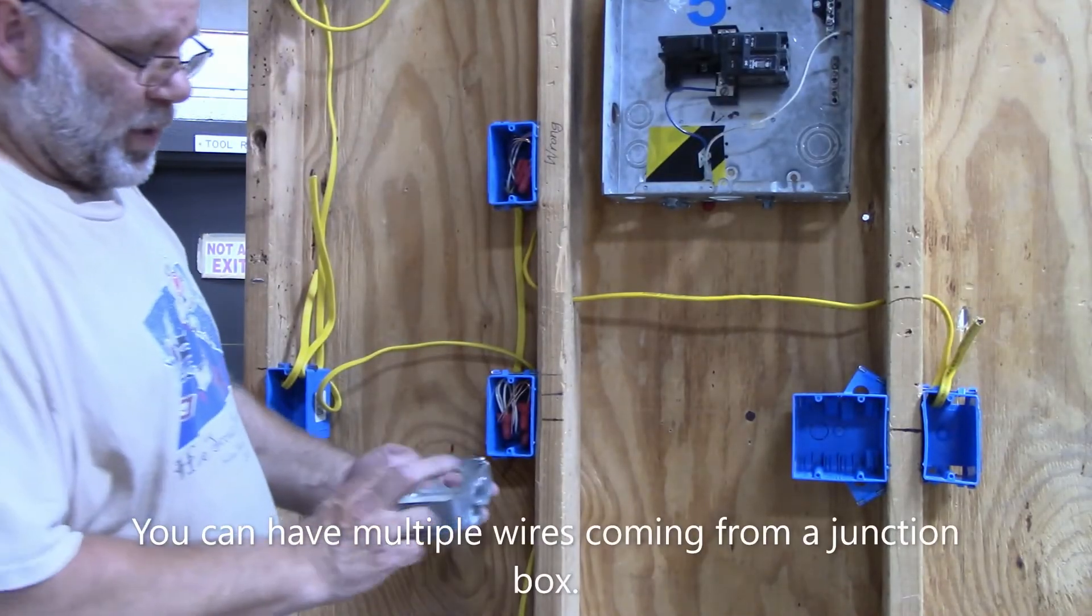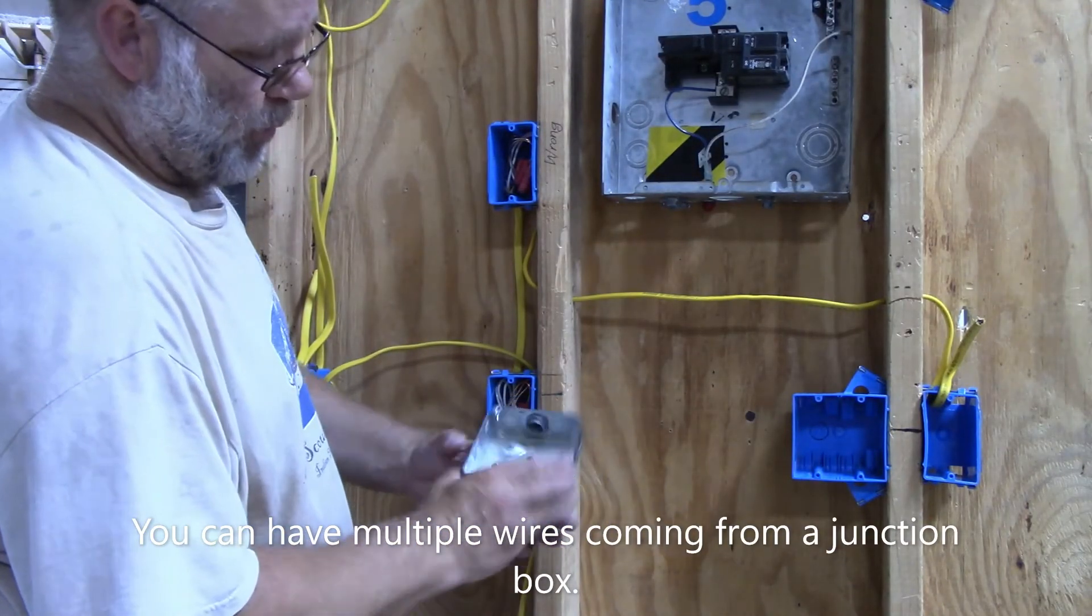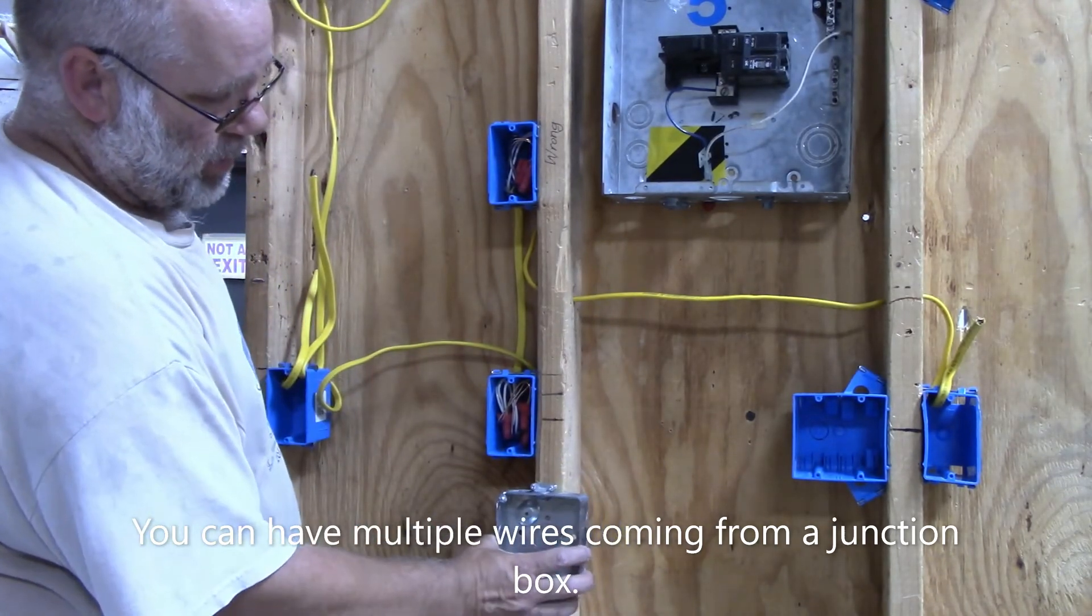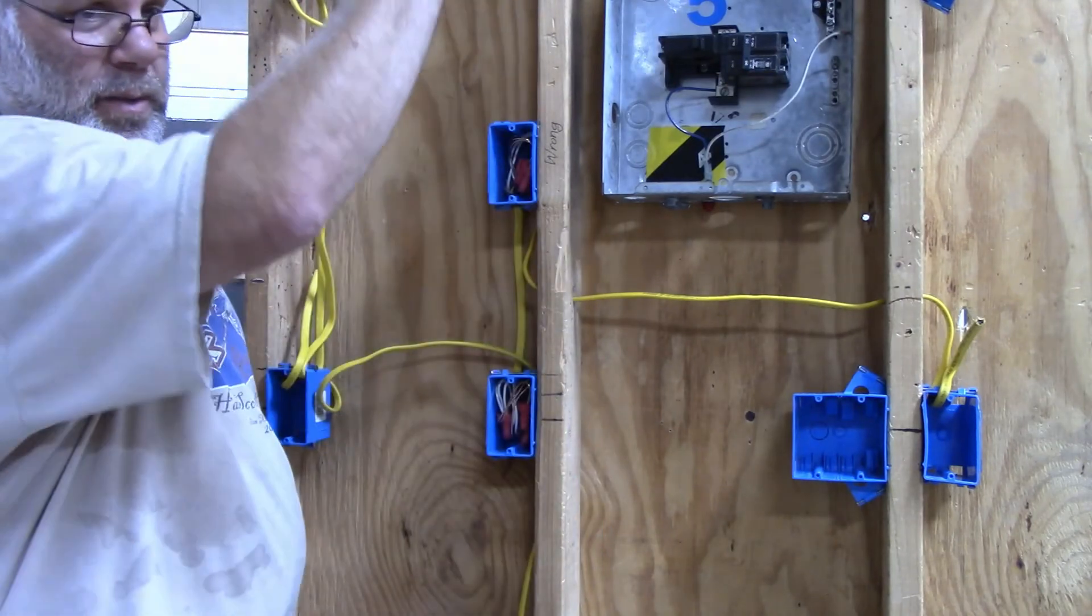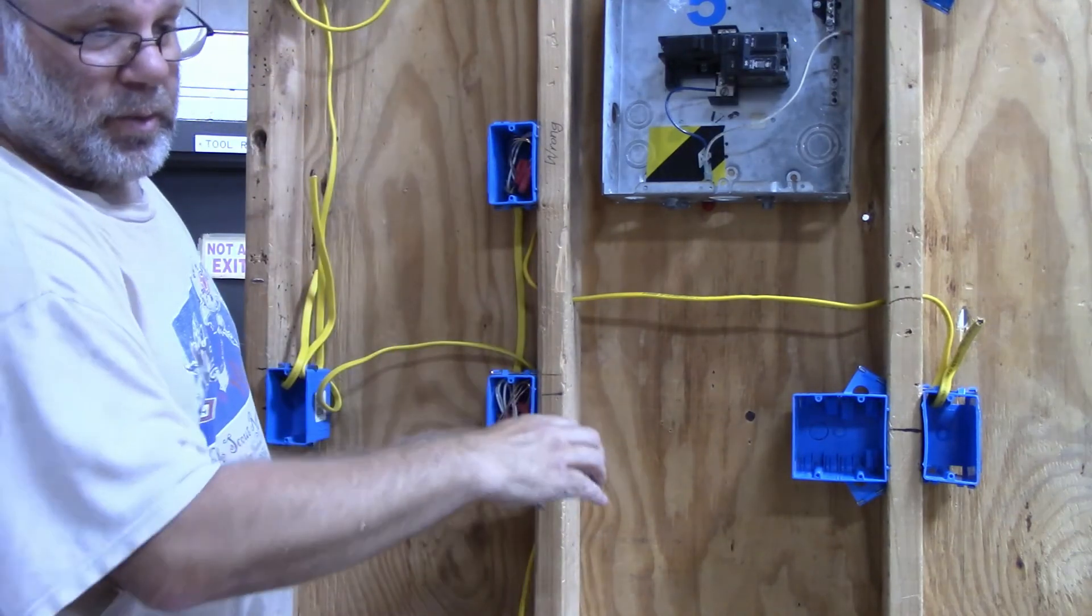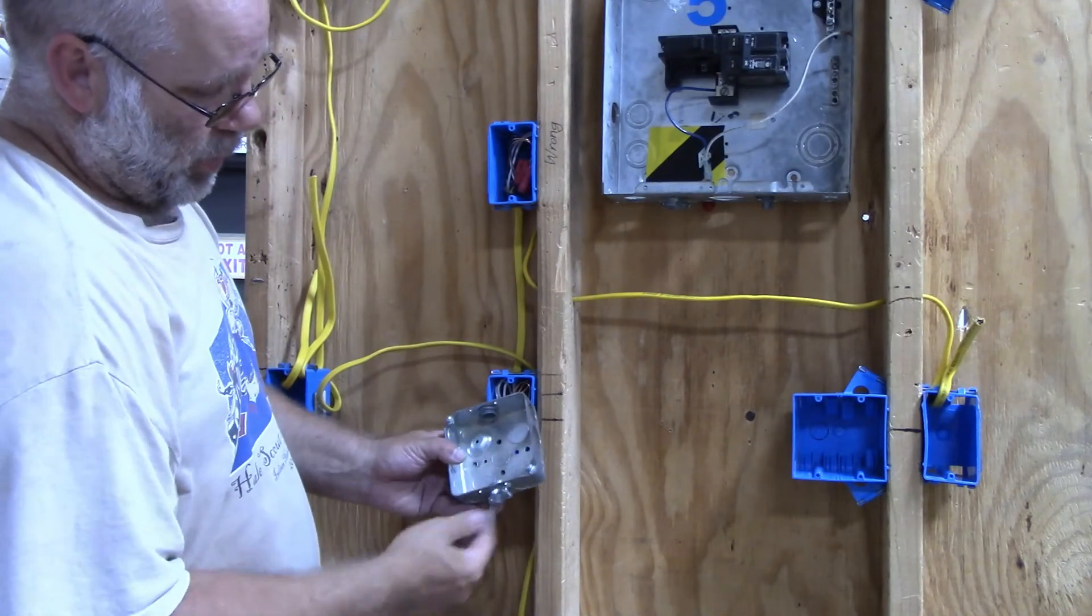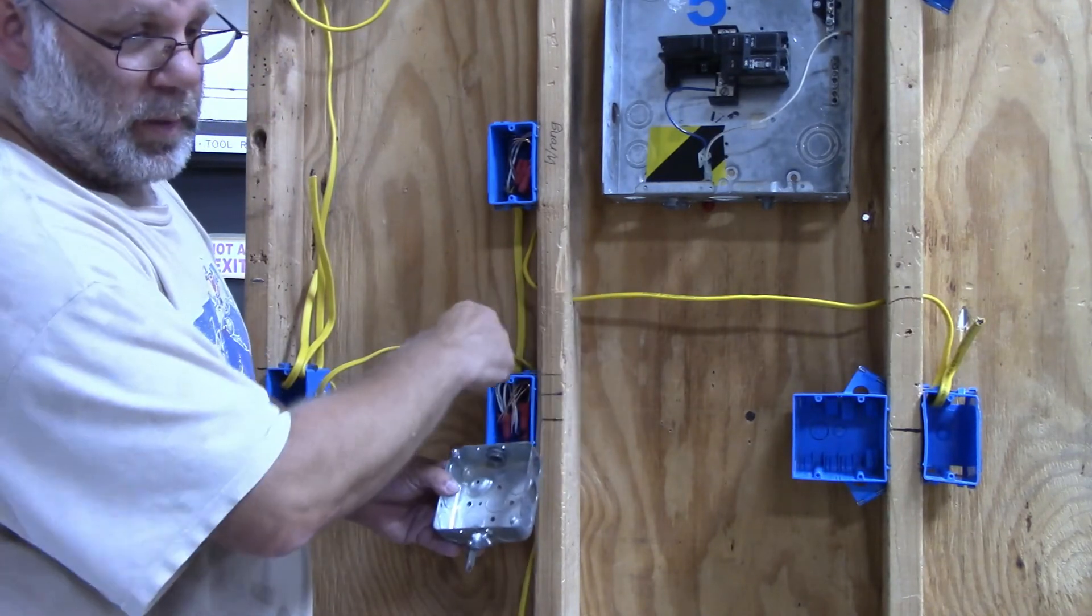If you're up in an attic or someplace where you can use this 4-inch box, you can again mount it to the side of the stud, you can mount it up in a rafter like this. You can mount it to the top of a rafter. You can mount it to a ceiling joist, however you want it to go. Run your new wire in, or your old wire in, a new wire to another box.